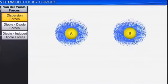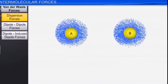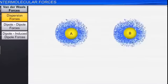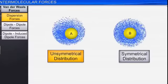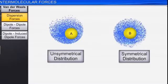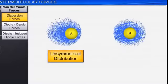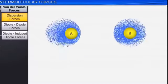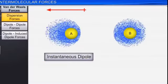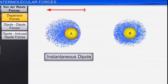Let's take an example with two atoms: Atom A and Atom B. The electrons turn around, creating a cloud distribution. Now, looking closely, Atom A and Atom B both have a symmetrical distribution initially. But the electron distribution around Atom A becomes unsymmetrical. This gives rise to an instantaneous dipole moment.